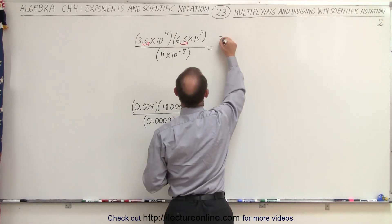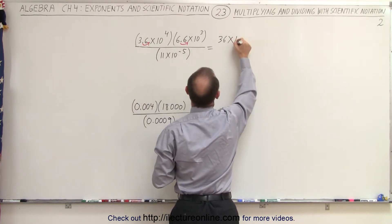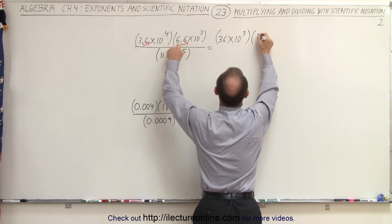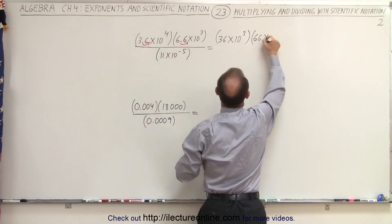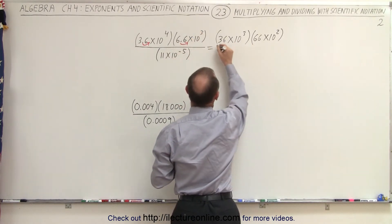When we do that, we get 36. And since we moved to the right, we have to subtract 1 from the exponent, times 10 to the 3rd. We multiply that times 66 times 10 to the 2nd power. Because we moved it to the right, we need to subtract 1 from the exponent.